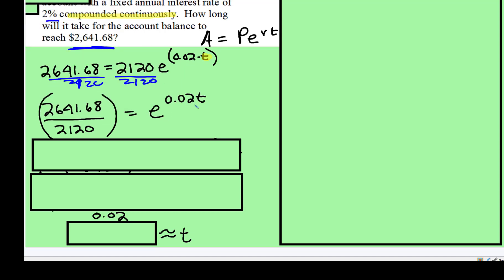Alright? So now we have E to the something is equal to that, and you think, now what? Well, every time you get to that, now what? That's when you use the inverse operation.